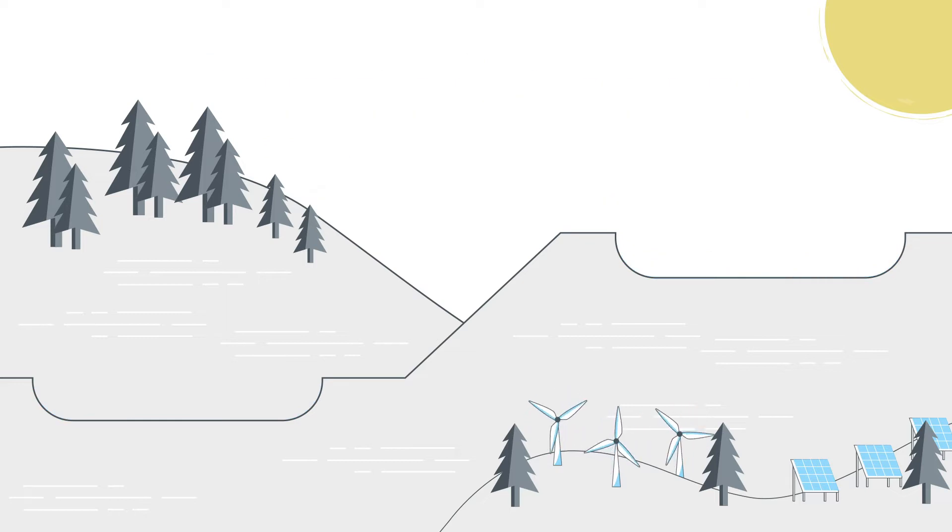The project consists of two reservoirs at different elevations connected by a pipe with reversible turbines. The system is filled with water once, and then reuses that water over and over.